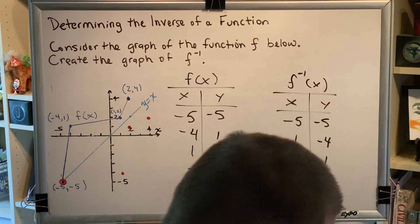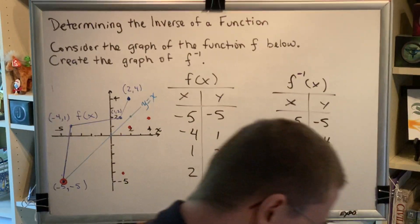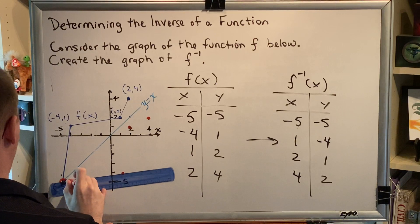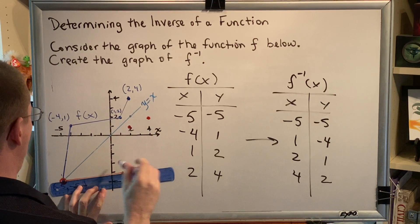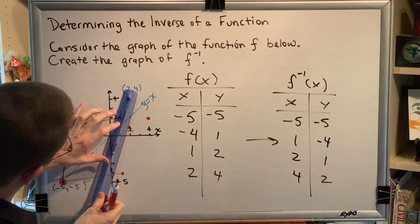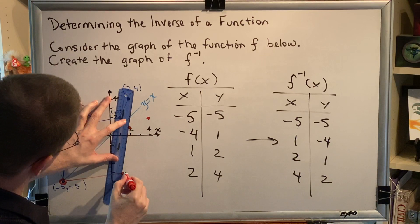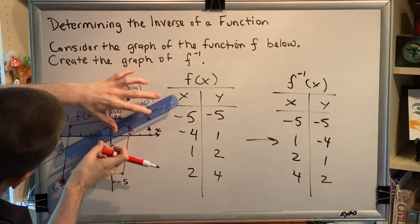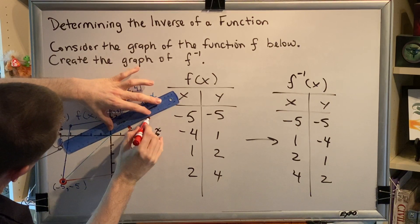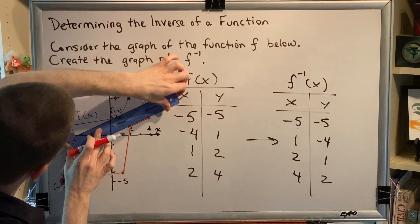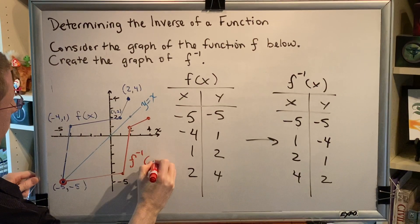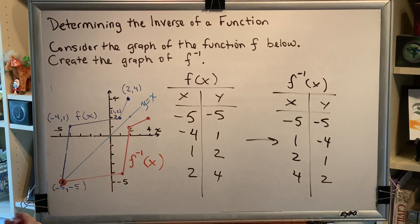So I'll get out my straight edge and I'll connect all of these dots together. So I have a line segment from here to here. I have a line segment from here to here. And I have a line segment from here to here. The red graph that I've just drawn is the graph of f inverse of x and is the final answer to our question.